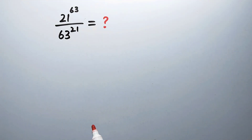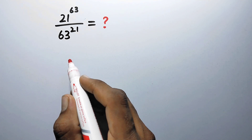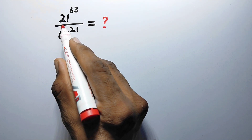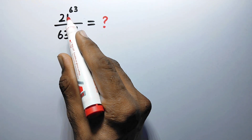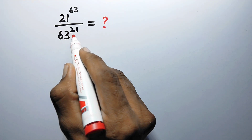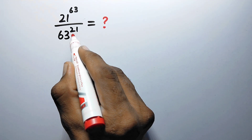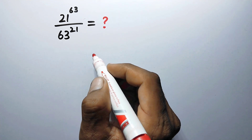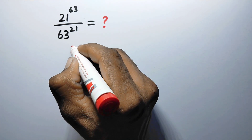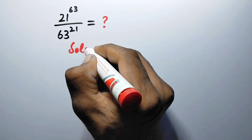Hello everyone and welcome to Explode Maths. In this video we have to simplify the problem: 21 raised to power 63 divided by 63 raised to power 21 is equal to what? Let us see its solution.